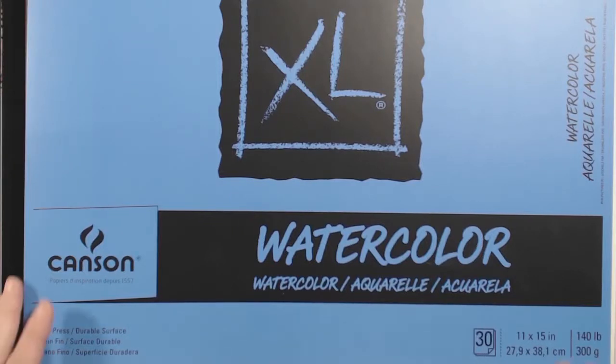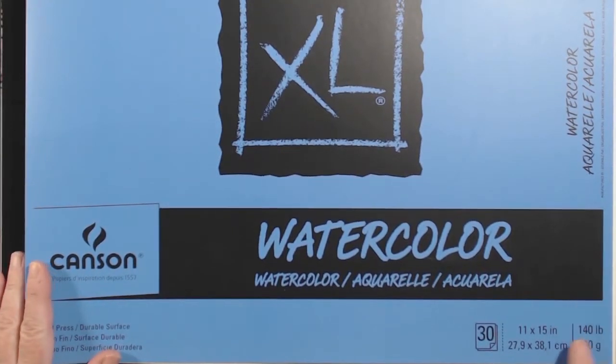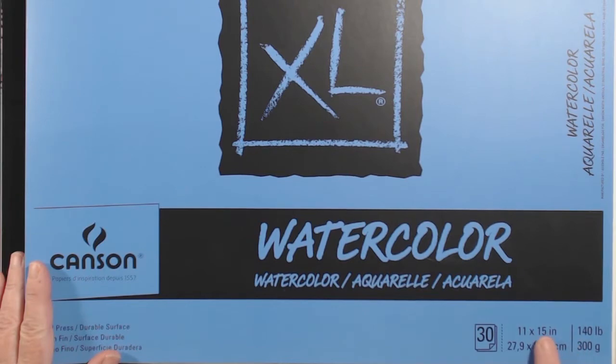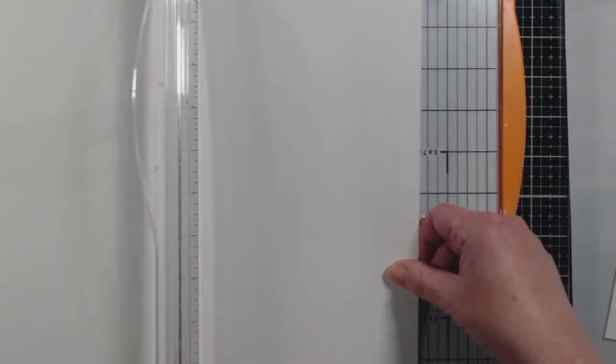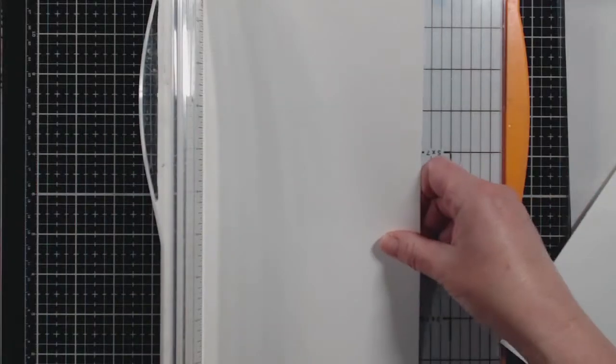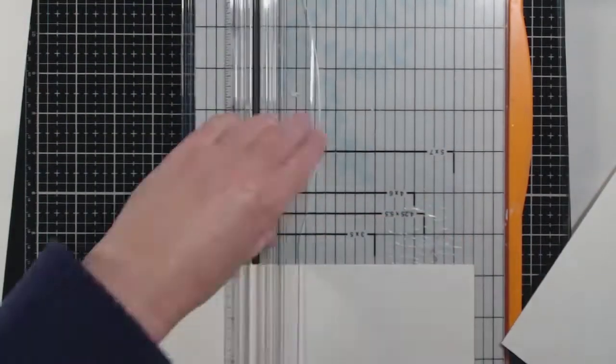The watercolor paper that I'll be using is Canson 140 pound 11 by 15 inch and if you cut this the right way you can get six A2 card sizes. So what I do is cut four and a quarter inch strips along the lengthwise portion of the paper and then if you cut that in half it cuts to five and a half.